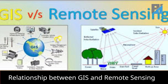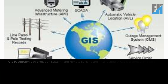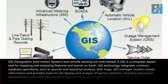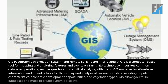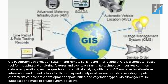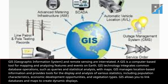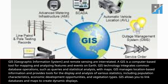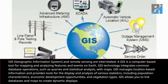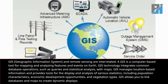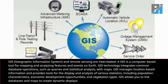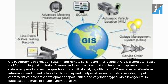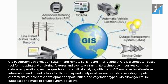Relationship between GIS and remote sensing: GIS, geographic information system, and remote sensing are interrelated. A GIS is a computer-based tool for mapping and analyzing features and events on earth. GIS technology integrates common database operations such as queries and statistical analysis with maps. GIS manages location-based information and provides tools for the display and analysis of various statistics including population characteristics, economic development opportunities, and vegetation types. GIS allows you to link databases and maps to create dynamic displays.